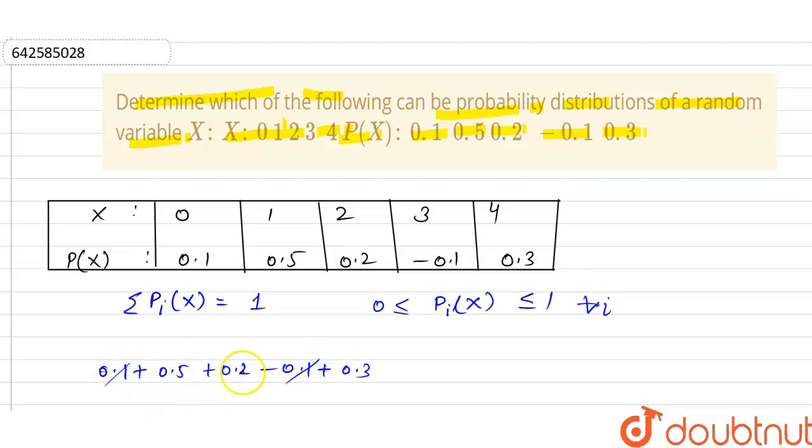this will cancel out. 5 plus 2 is 7, plus 3 means 1 is equal to 1. But here